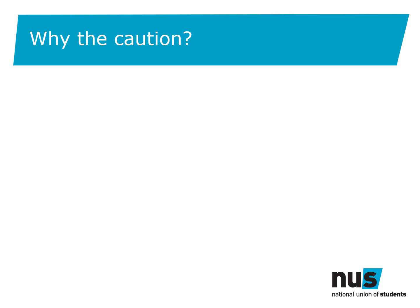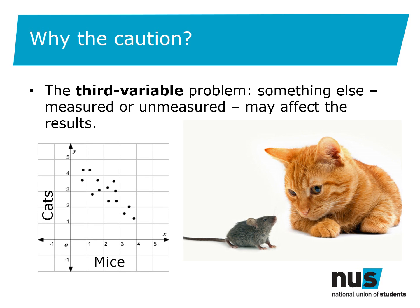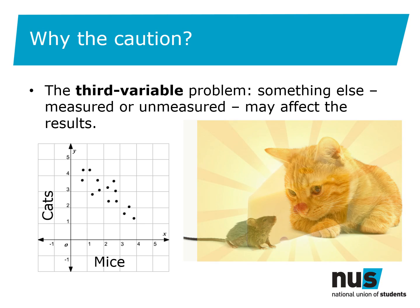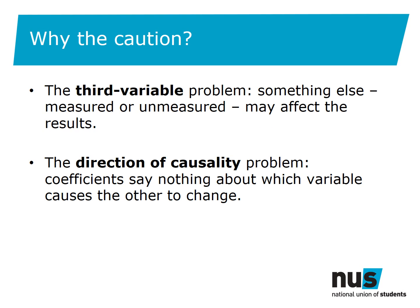So why might it look like two things are related when in fact they're not? The first option is the third variable problem — where another variable you haven't accounted for is actually the reason behind changes in both variables. For example, if you look at a graph showing a negative correlation between the number of cats in a street and the number of mice, the obvious conclusion is that the cats are eating the mice. However, this conceals the third variable: a cheese shop has just opened on the next street and attracted all the mice away. The second problem is the direction of causality — coefficients don't tell you which variable causes the other to change.